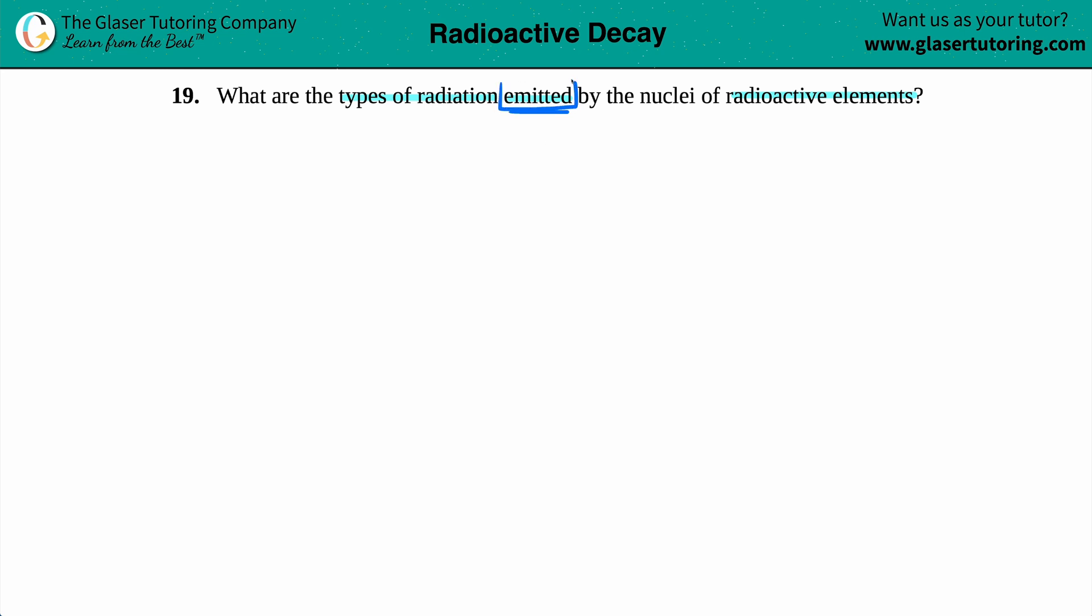If something is emitted or undergoing an emission, that means that your radiation, whatever it is, is always going to be on the product side. So for all of these that we're going to be going through, all the different types of radiation, those particles or those rays, will be on the product side.